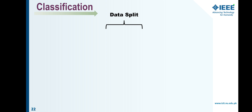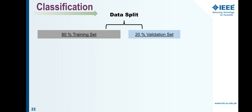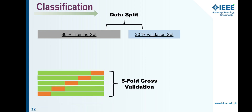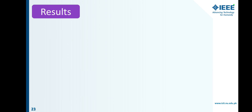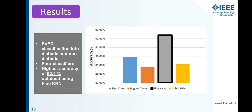For classification, we split the data into 80 percent training set and 20 percent validation set. We used k-fold cross-validation with k equal to 5 to reduce bias of the data towards any class. We used four classifiers: fine tree, bagged tree, fine K-Nearest Neighbor (KNN), and cubic support vector machine (SVM).